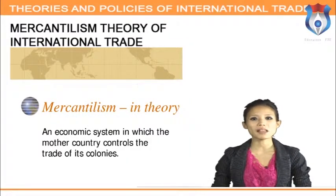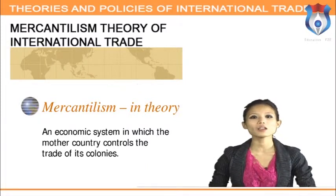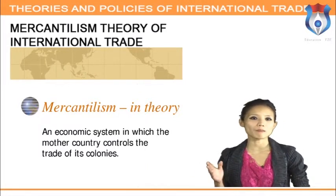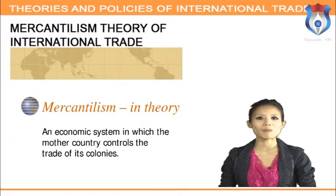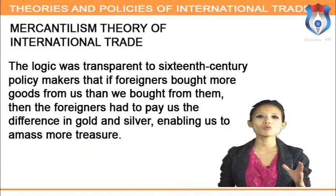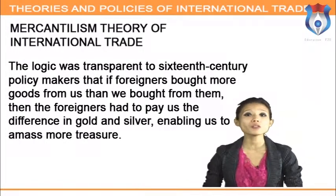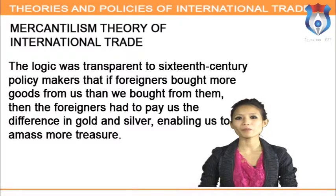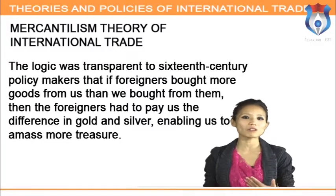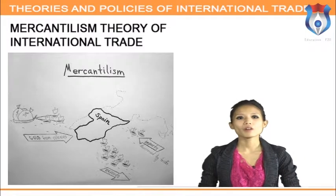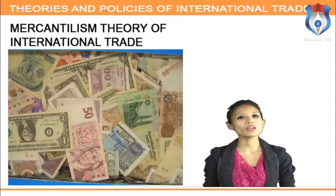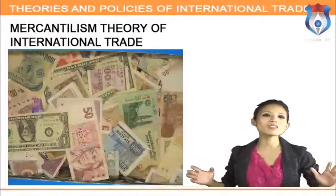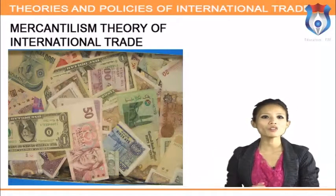Mercantilism was a 16th-century economic philosophy that maintained that a country's wealth was measured by its holdings of gold and silver. This required countries to maximize exports and minimize imports. The logic was transparent to 16th-century policymakers: if foreigners bought more goods from us than we bought from them, the foreigners had to pay us the difference in gold and silver, enabling us to amass more treasure. Mercantilism pressed for a favorable balance of trade and balance of payments.